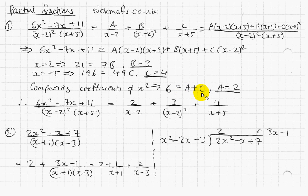So if a plus c equals 6, but we already know c equals 4, that means a equals 2. Simple as that. So therefore I've worked out all the letters a, b and c, a equals 2, b equals 3, c equals 4. So 2, 3, 4 as we had before. So 2 over x minus 2, 3 over x minus 2 squared, and 4 over x plus 5. So that's one example done.